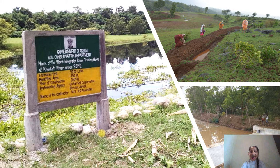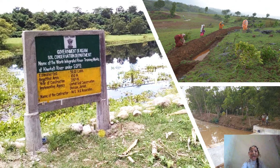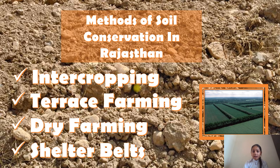We have now come to the end of our presentation. To conclude, let's revise what we learned today. Soil is a mixture of various minerals, rocks, and living organisms that support life. The soil of Rajasthan is broadly divided into eight categories, and the soil of Assam into four categories. We also learned how various methods of soil conservation are practiced in both Assam and Rajasthan. Hope you liked my topic — thank you.